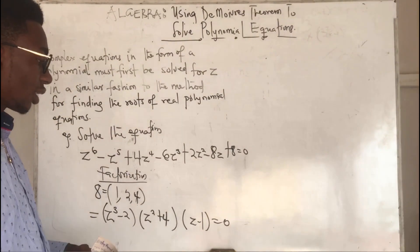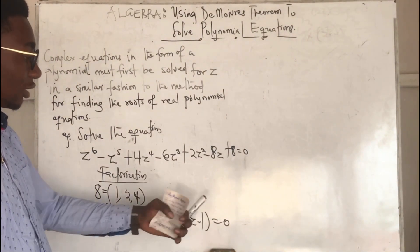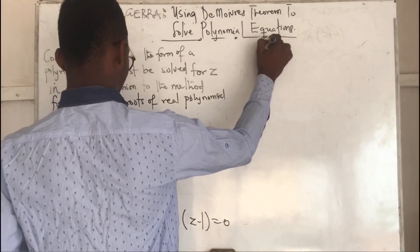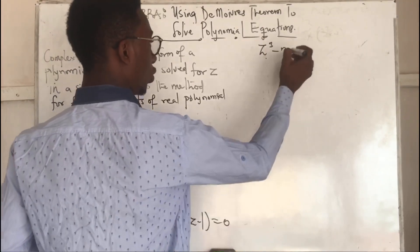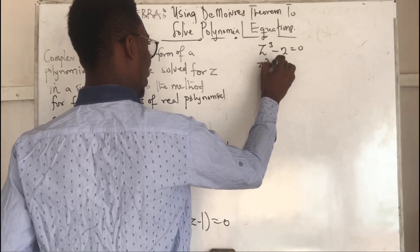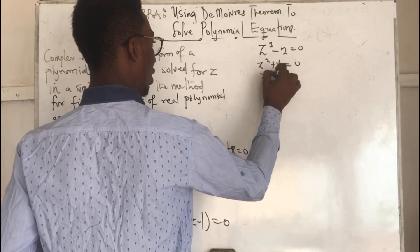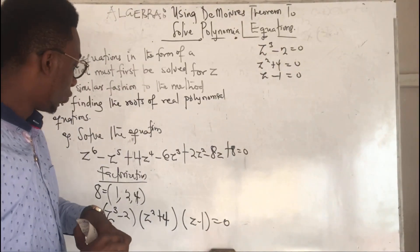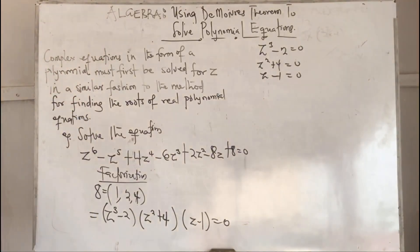So now we have three separate equations: z³ − 2 = 0 (equation 1), z² + 4 = 0 (equation 2), and z − 1 = 0 (equation 3). These are the three equations we are working with.